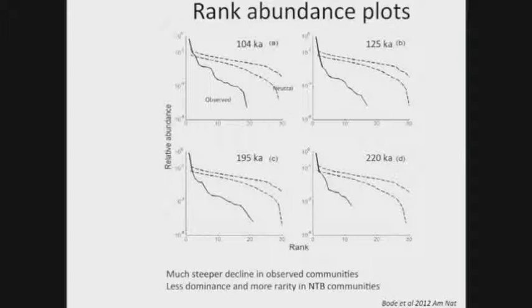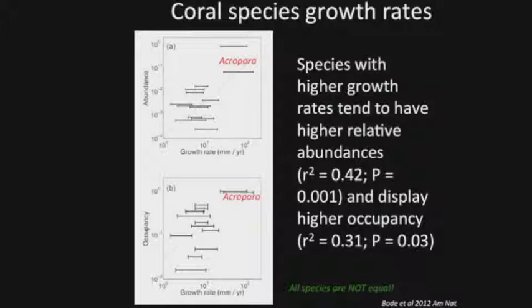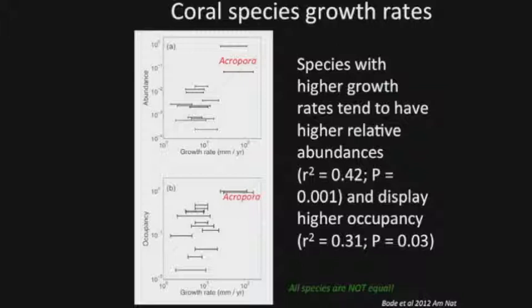Looking at rank abundance plots — relative abundance on the y-axis, rank on the x-axis — the highest-ranked species are much more abundant in observed data than predicted by neutral theory. There's also more rarity in the neutral models than in nature. The neutral theory is a poor predictor of the observed rank distributions. We also asked whether there are demographic properties in corals that counter the assumption of species equality. We plotted abundance and occupancy against growth rates, and found that taxa with the highest occupancy and abundance are the acroporas — the big branching corals — which are fast-growing. Higher growth rates are characteristic of highly abundant and widespread taxa because they're better competitors: they grow fast, over-top other corals, and out-compete even algae.